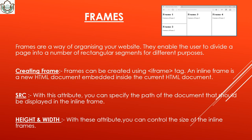Frames are a way of organizing your website — they enable the user to divide a page into a number of rectangular segments for different purposes. To create a frame, use the iframe tag. An inline frame is an HTML document embedded inside the current HTML document. Use the src attribute to specify the path of the document to be displayed in the inline frame.